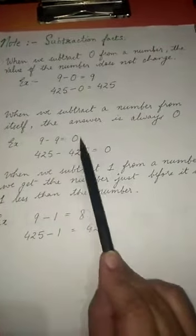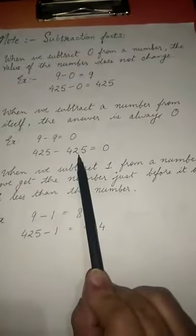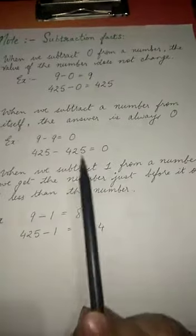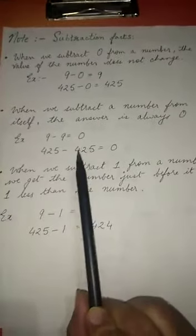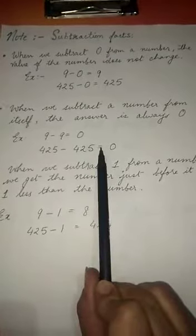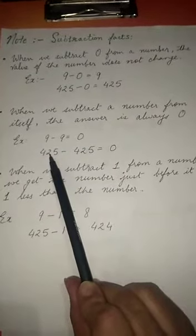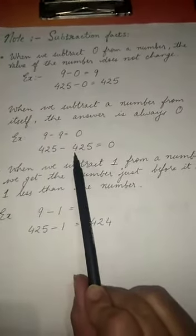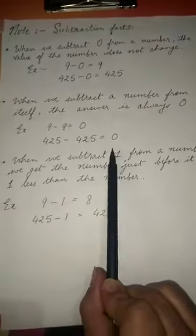Fact number 2: when we subtract a number from itself, the answer we get is always 0. For example, 9 minus 9 equals 0, and 425 minus 425 equals 0.